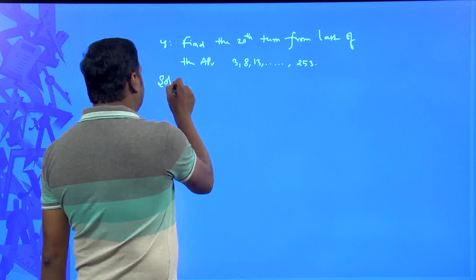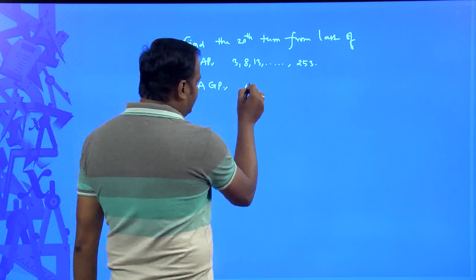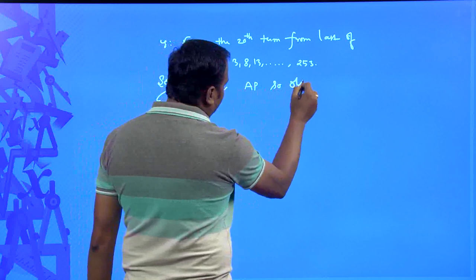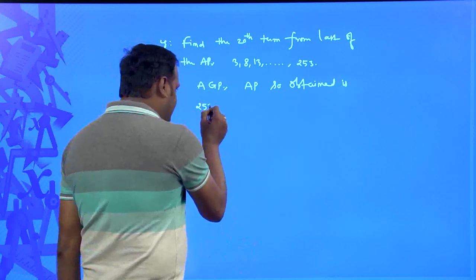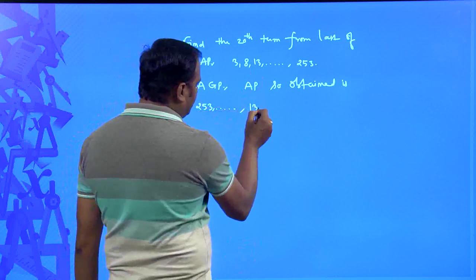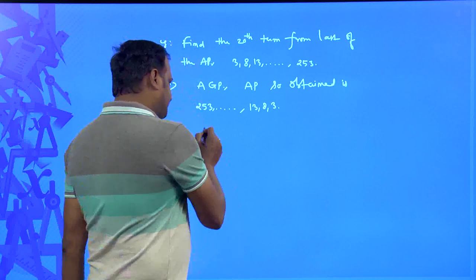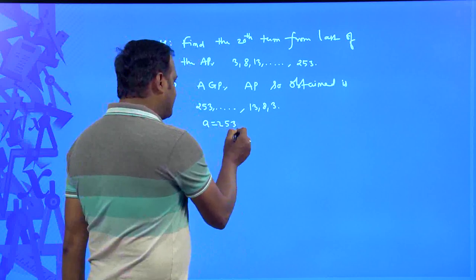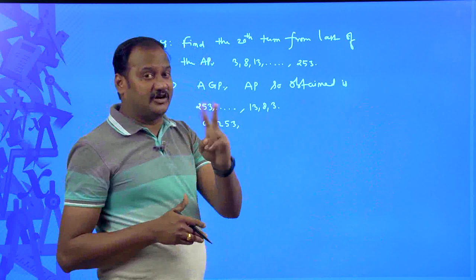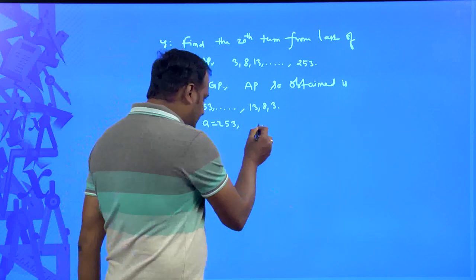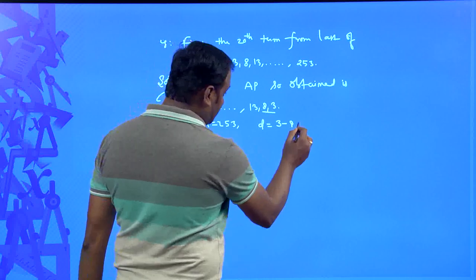To find the 20th term from the last, let us rewrite the AP starting from the last term: 253, ..., 13, 8, 3. In this reversed AP, the first term a = 253. To find the common difference, we take two consecutive terms from the reversed sequence: 3 − 8 = −5. So the common difference d = −5.